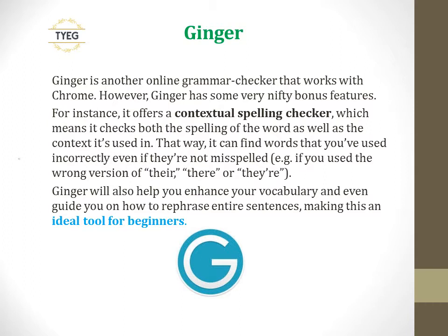Ginger is another online grammar checker that works with Chrome. However, Ginger has some very nifty bonus features. For instance, it offers a contextual spelling checker, which means it checks both the spelling of the word as well as the context it's used in. That way, it can find words that you've used incorrectly even if they're not misspelled — for example, if you used the wrong version of 'there,' 'their,' or 'they're.' Ginger will also help you enhance your vocabulary and even guide you on how to rephrase entire sentences, making this an ideal tool for beginners.